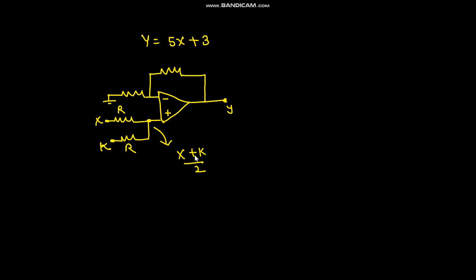And we need 5X in the output, so we need the gain of 10 at least. So for taking the gain of 10, what we can do is use 9R and R. So this amplifier would give us gain of 10, and now we are having the output equals to 5X plus 5K. So 5K is equals to 3, so K is 3 by 5. So what we need to do is we need to put here 3 by 5. So in this way we can also implement using one op-amp only. Previously I didn't think of it, now I have thought of it, so I made one small video. Thank you.